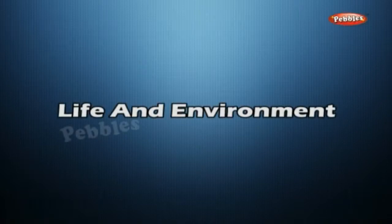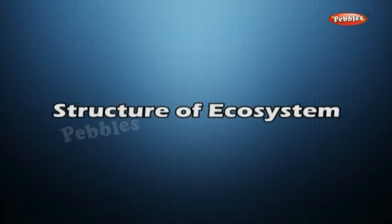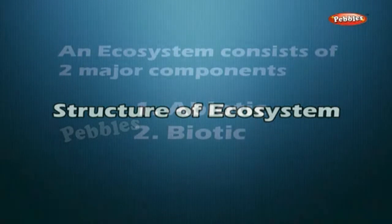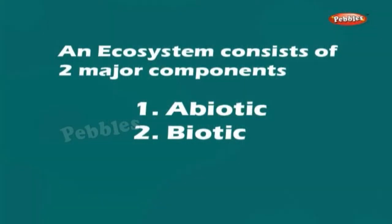Life and Environment: Structure of Ecosystem. An ecosystem consists of two major components: abiotic and biotic.